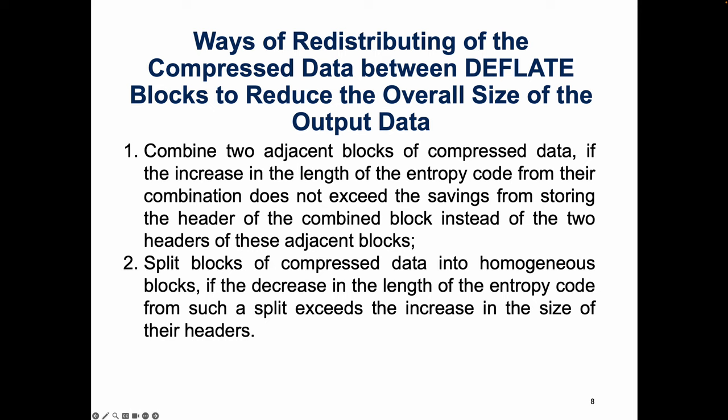There are two ways of redistributing compressed data between deflate blocks to reduce the overall size of output data. First, combining adjacent blocks of compressed data, if the increase in the length of the entropy code from their combination does not exceed the saving from storing the header of the combined block instead of the two headers of the original blocks. Second, splitting blocks of compressed data into homogeneous blocks, if the decrease in the length of the entropy code from such a split exceeds the increase in the size of their headers.